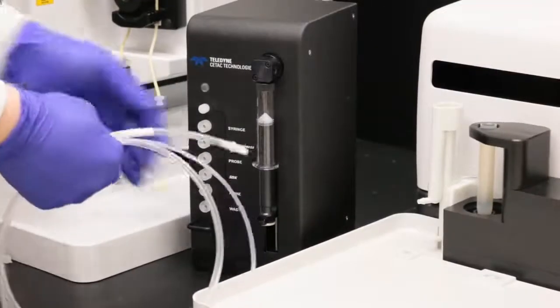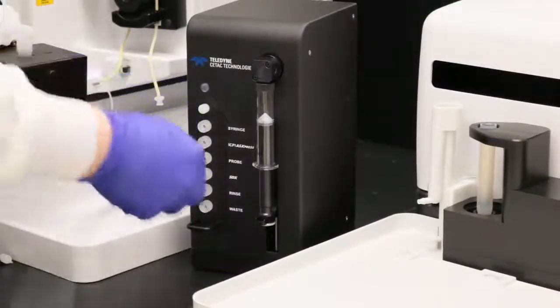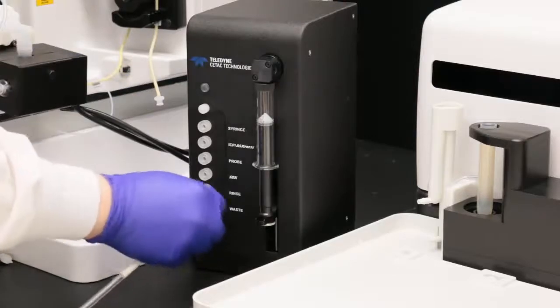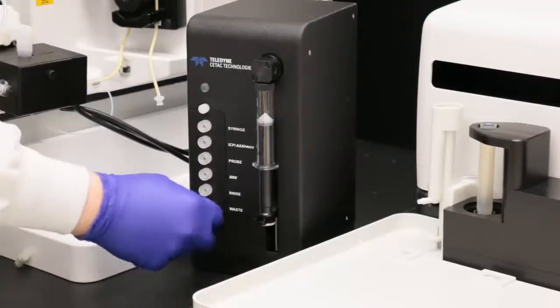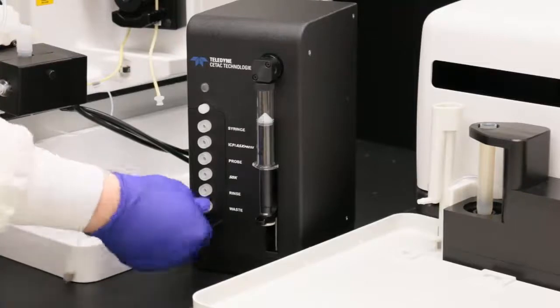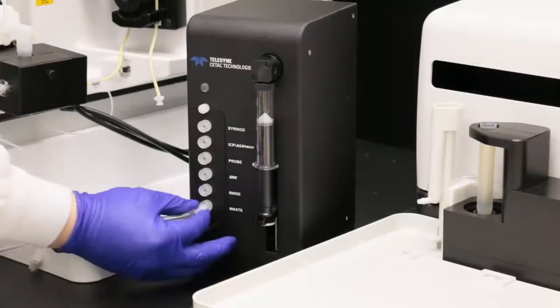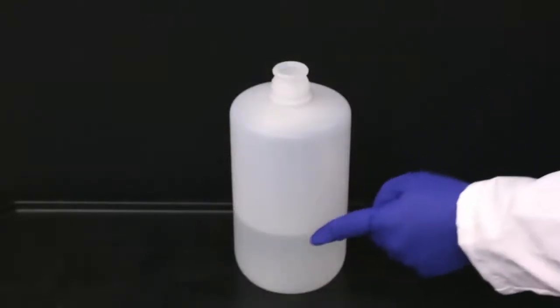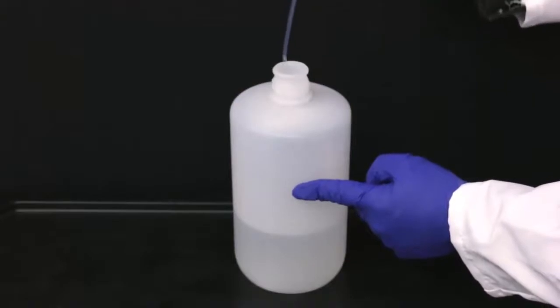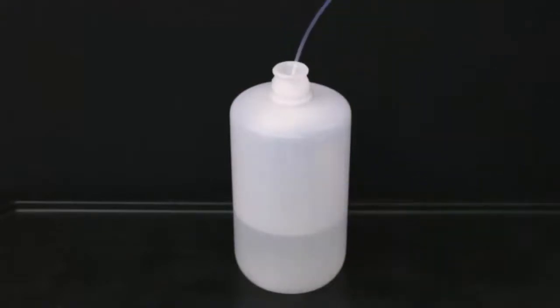Locate the waste tube. Connect the waste tube to the waste connector on the front of the SDX pump module. Tighten the fitting with your fingers. Place the other end of the waste tube into the waste container. Ensure that the outlet of the waste tubing is placed so that it will remain above the surface of the liquid in the waste container.